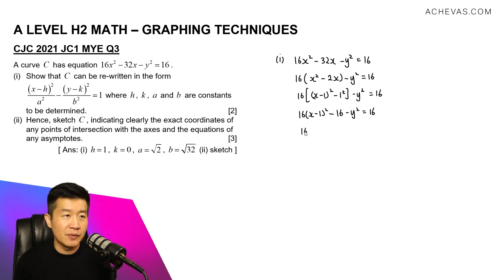Bringing 16 over to the other side, we have 16(x - 1)² - y² = 16 + 16. This is 32. And I'm going to divide by 32 throughout the equation, which will then give me (x - 1)²/2 - y²/32 = 1.